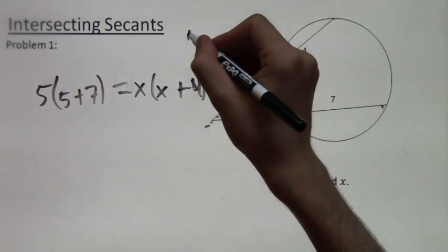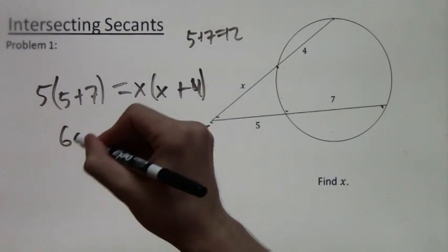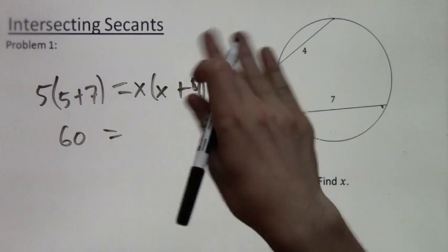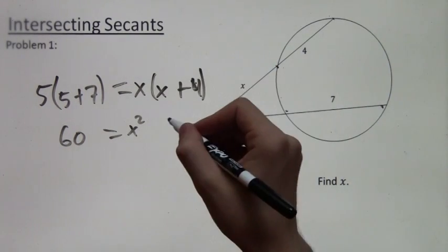This simplifies. 5 plus 7 is 12. And 5 times 12 is 60. And the x pairs with the x to make an x squared, and x goes with 4 to make 4x.